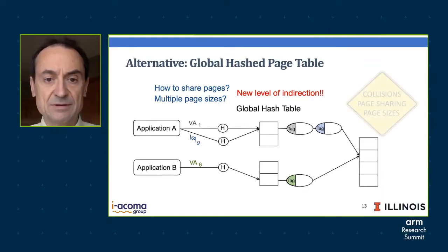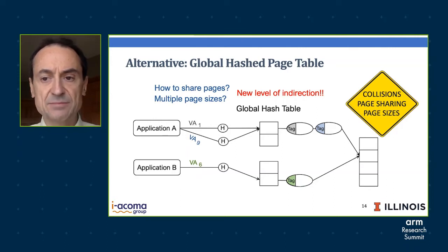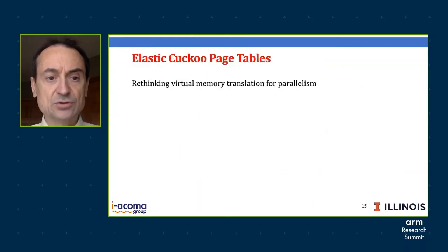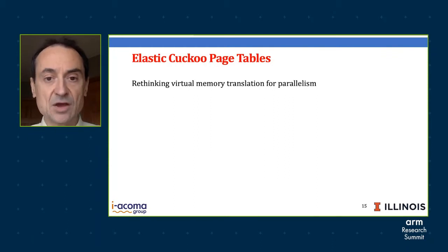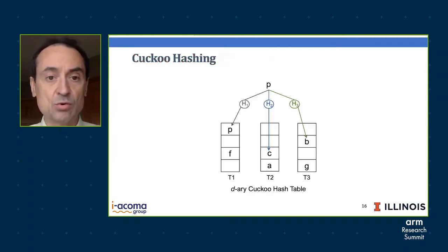How do we solve the problems of collisions, page sharing, and page size? We propose to rethink virtual memory translation from the ground up for parallelism — what we call elastic cuckoo page tables. To describe this design, I first need to discuss what a cuckoo hash table is.